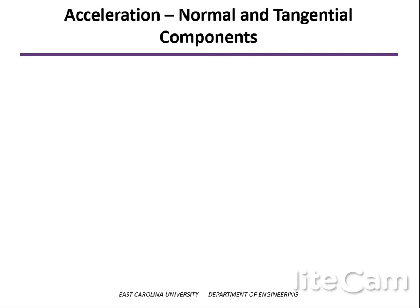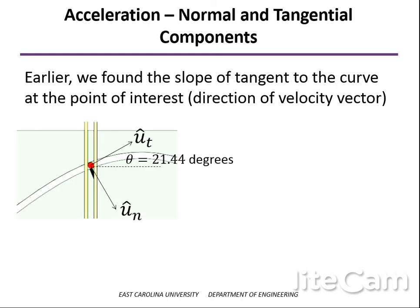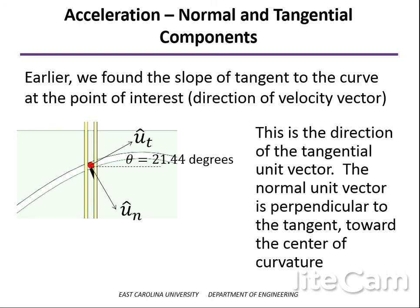Now let's look at the acceleration in normal and tangential components. The velocity vector is tangent to the path, defined by the unit vector u-sub-t. Normal to that — perpendicular to it — is the normal vector u-sub-n, which points toward the center of curvature, always toward the concave side of the curve. The angle we found earlier is 21.4 degrees.